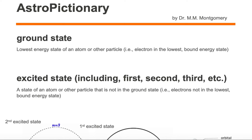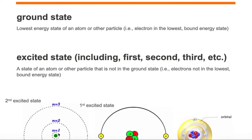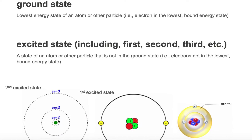Ground state is the lowest energy state of an atom or other particle, where the electron or electrons are in the lowest bound energy state. Compare this with excited state, including the first, second, and third excited states — a state of an atom or other particle that is not in the ground state, meaning electrons are not in the lowest bound energy state.